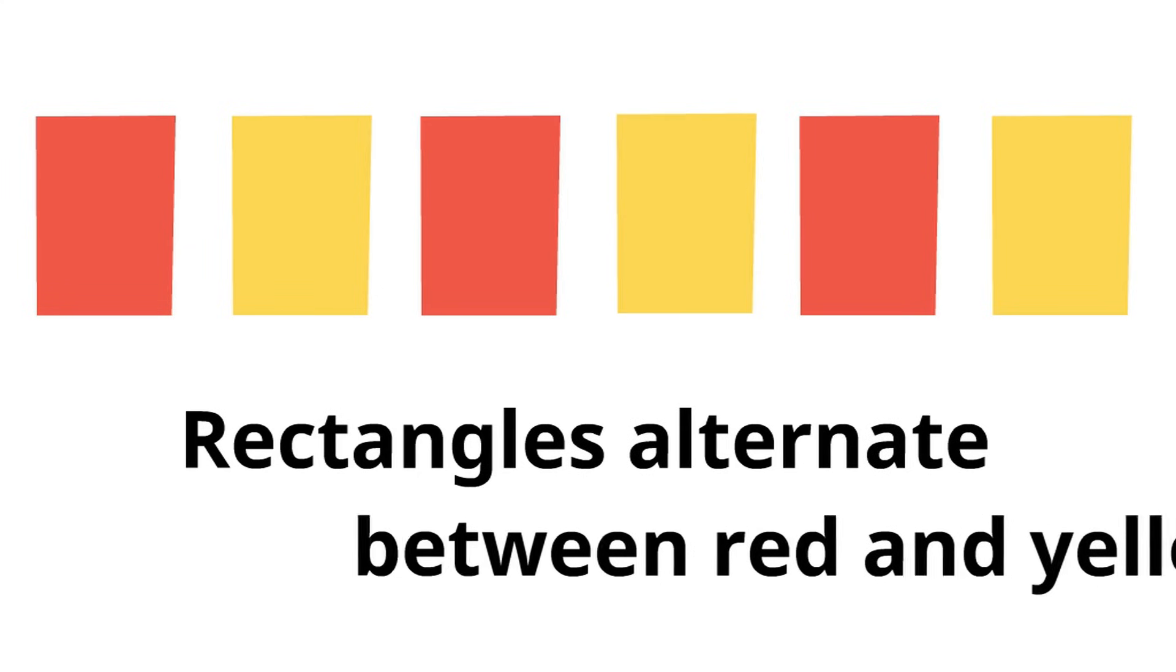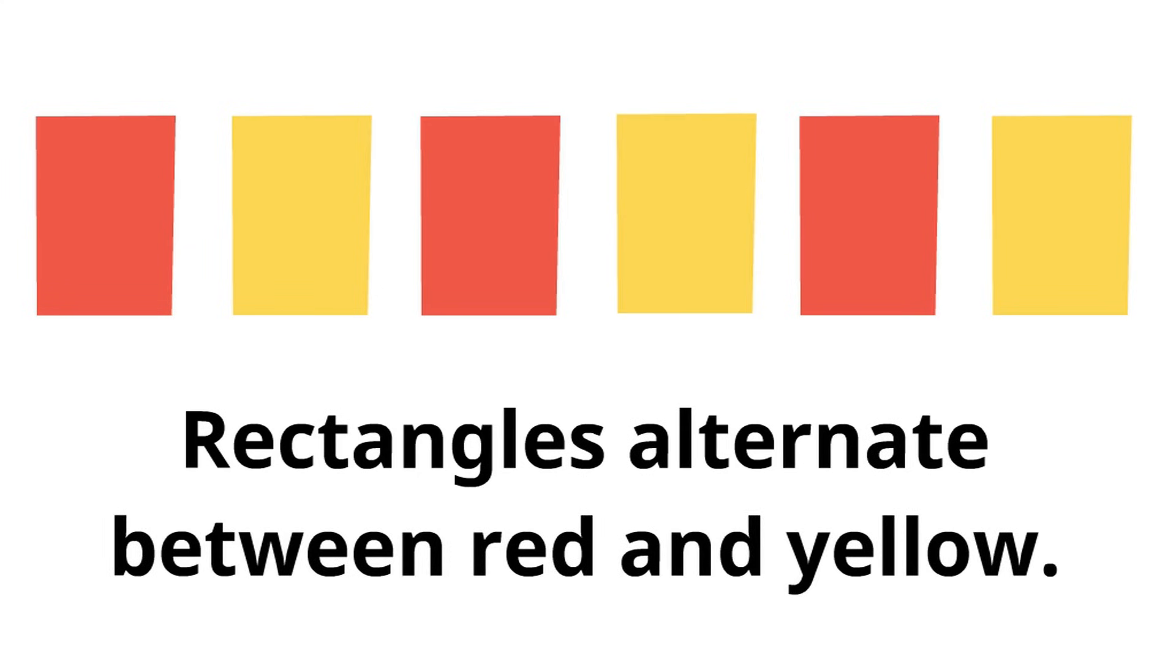What special rule does this pattern follow? Well, rectangles alternate between red and yellow. Do you see that? The rule tells us how the pattern works. In this pattern, rectangles alternate between red and yellow.